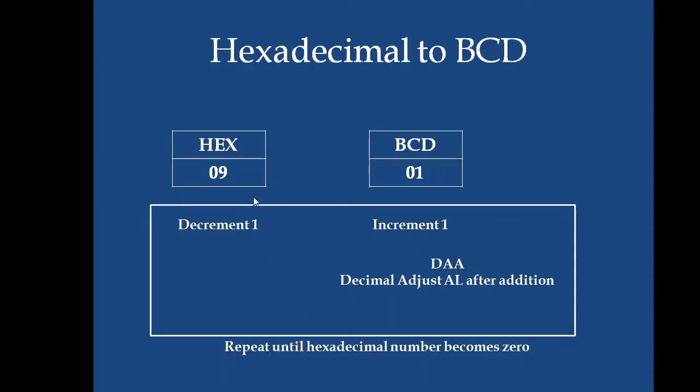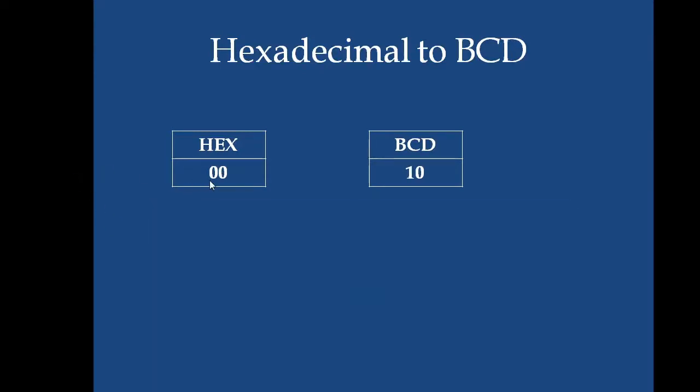It has to be completed 9 more times. After that, it will become 0. Finally, the hexadecimal value will become 0 whereas its equivalent BCD will be 10. Now we will see the 8086 program.